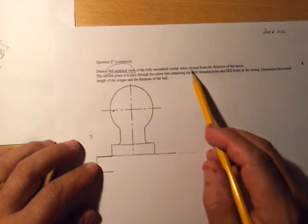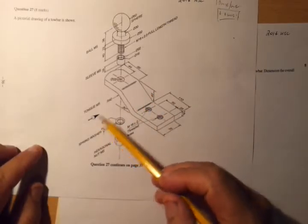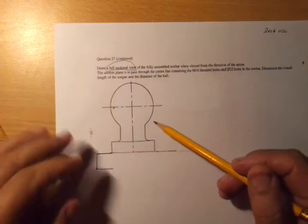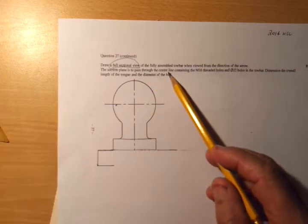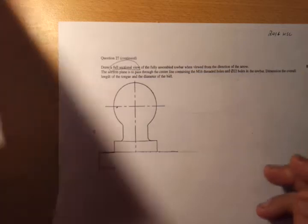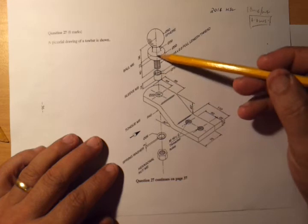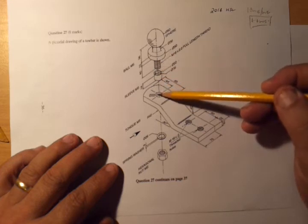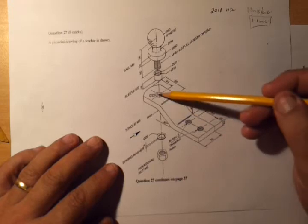Now, next thing is when viewed from the direction of the arrow. So another thing is make sure that you draw it in the direction you're supposed to be drawing. So there's the direction of the arrow, and they've been kind enough to start you off over here. The section plane is to pass through the center line.